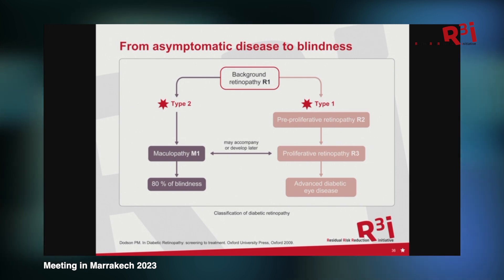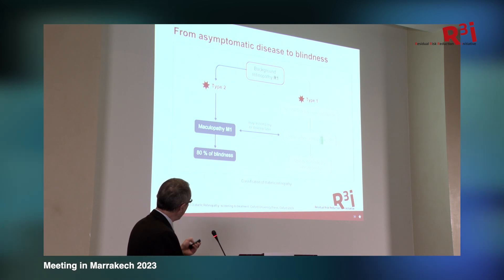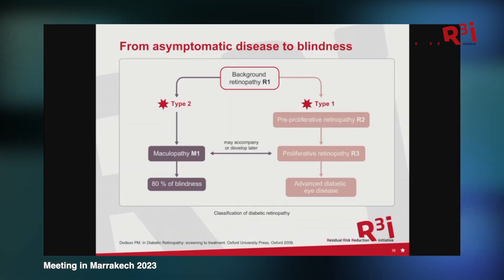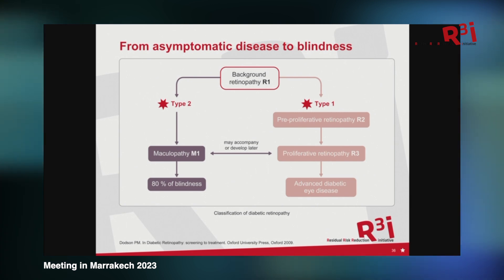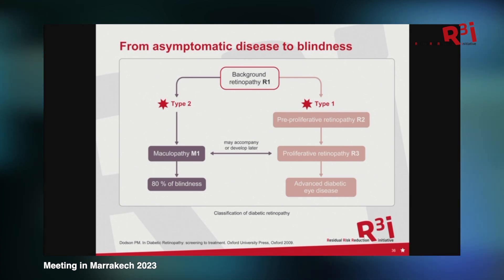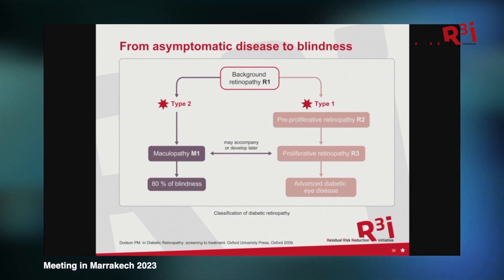Type 2 diabetic retinopathy may not be identical to type 1 retinopathy, even if some conditions can be shared. Maculopathy is more typical of type 2 diabetic retinopathy, whereas proliferative and pre-proliferative retinopathy may be more relevant for type 1 diabetes.